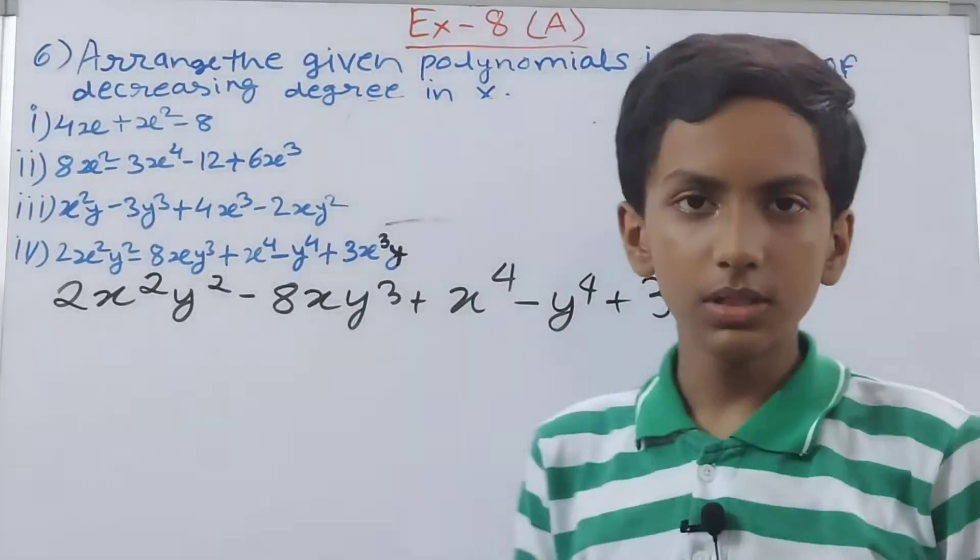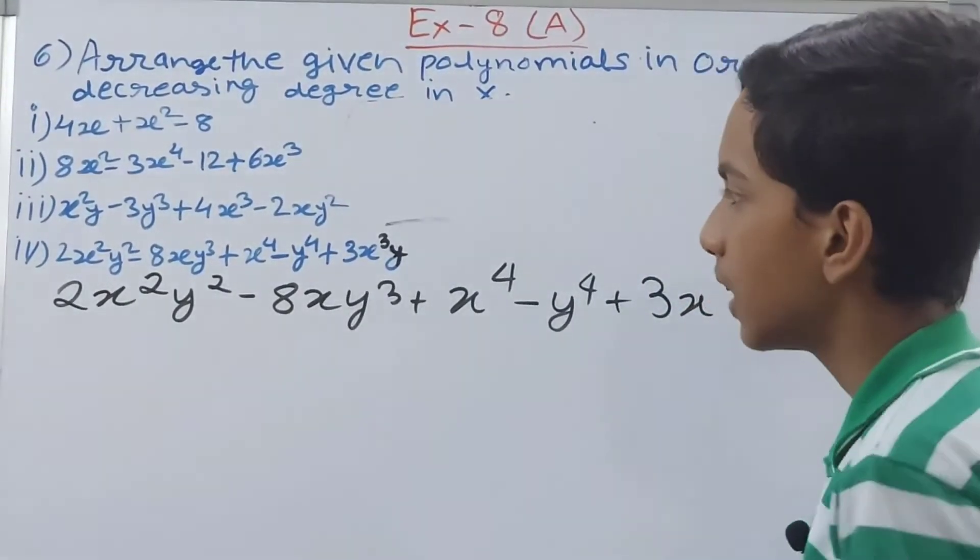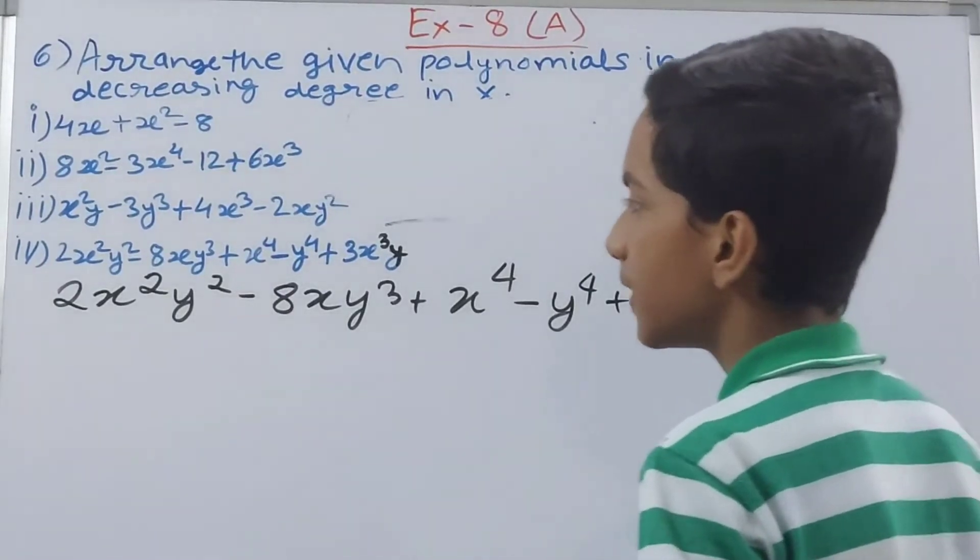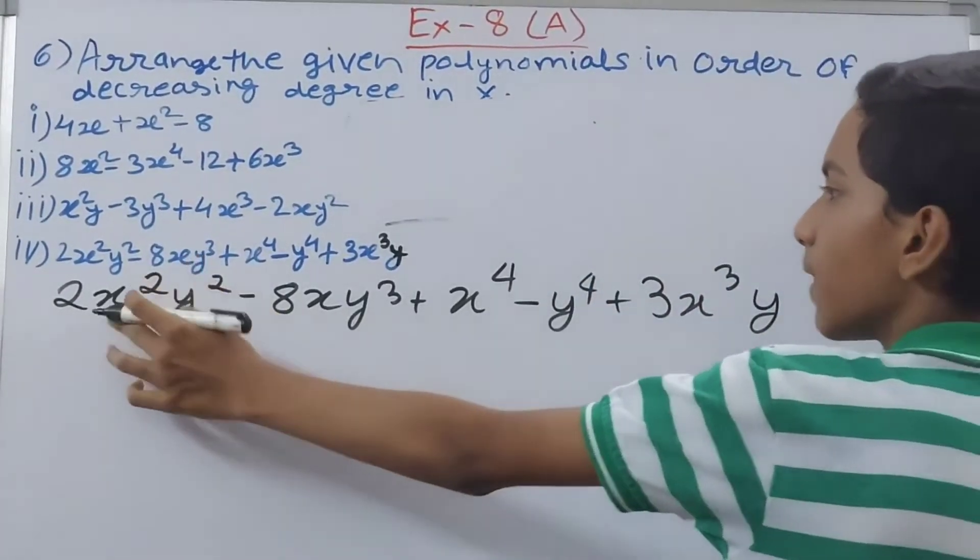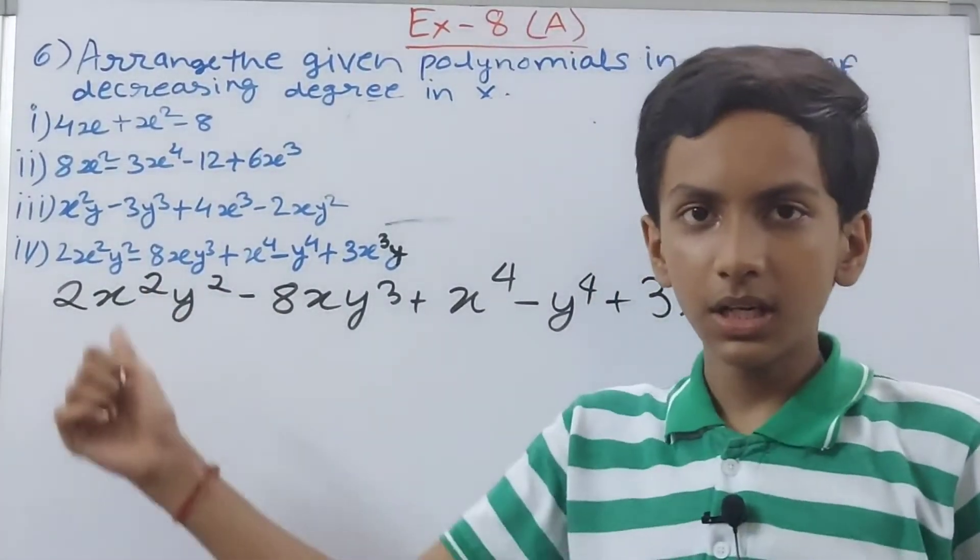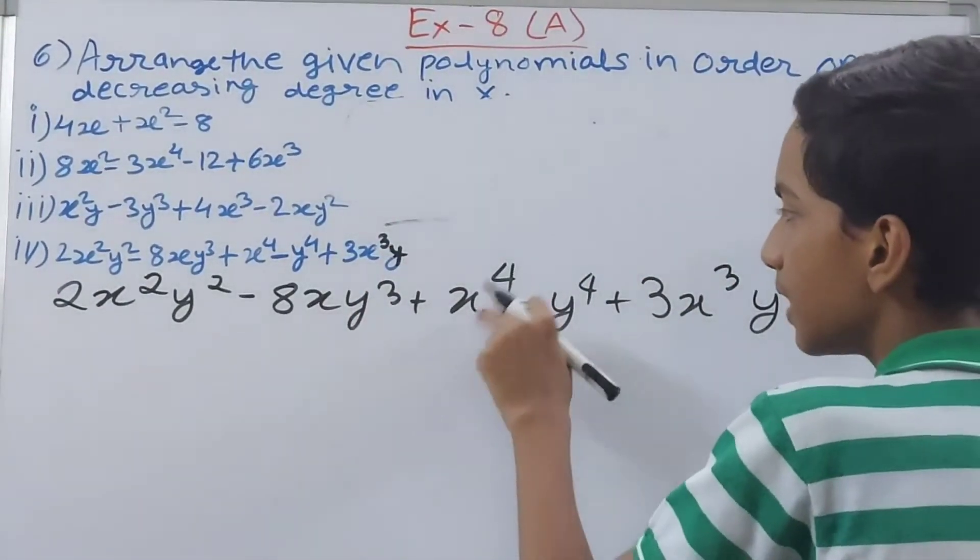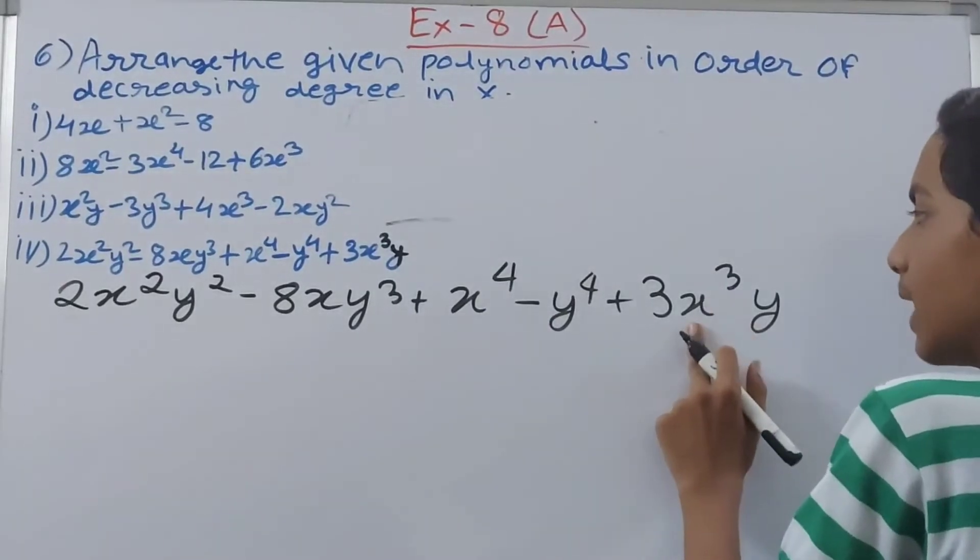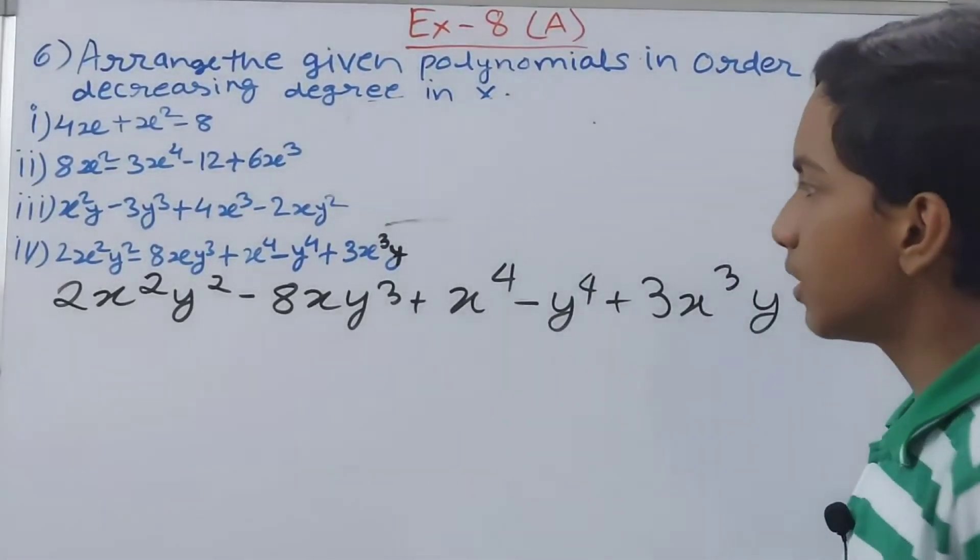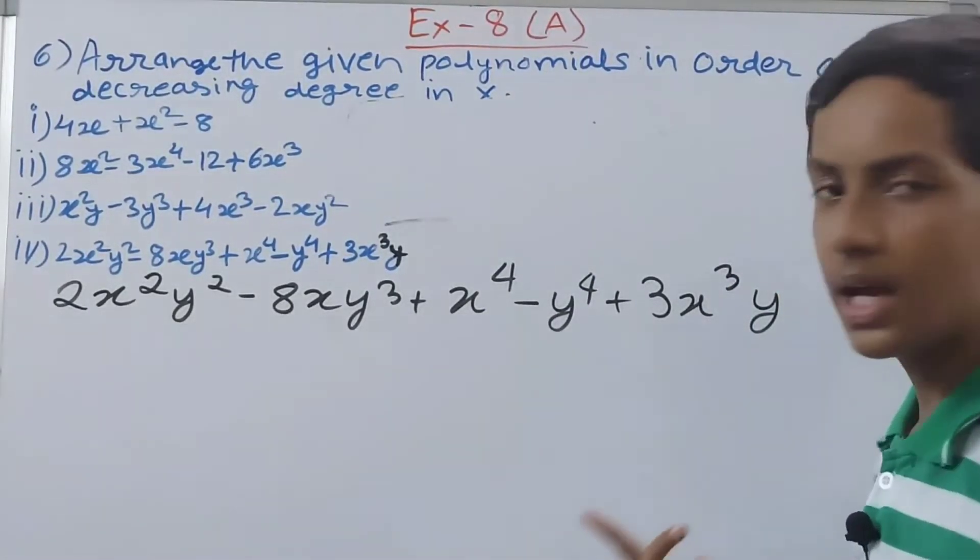This is our polynomials basically we have to arrange. So again we count the degrees of x. Here we have x with 2 as the degree. Here we have x with 1, here we have x with 4, and here we have x with 3. So in total we get 4, 3, and 2.